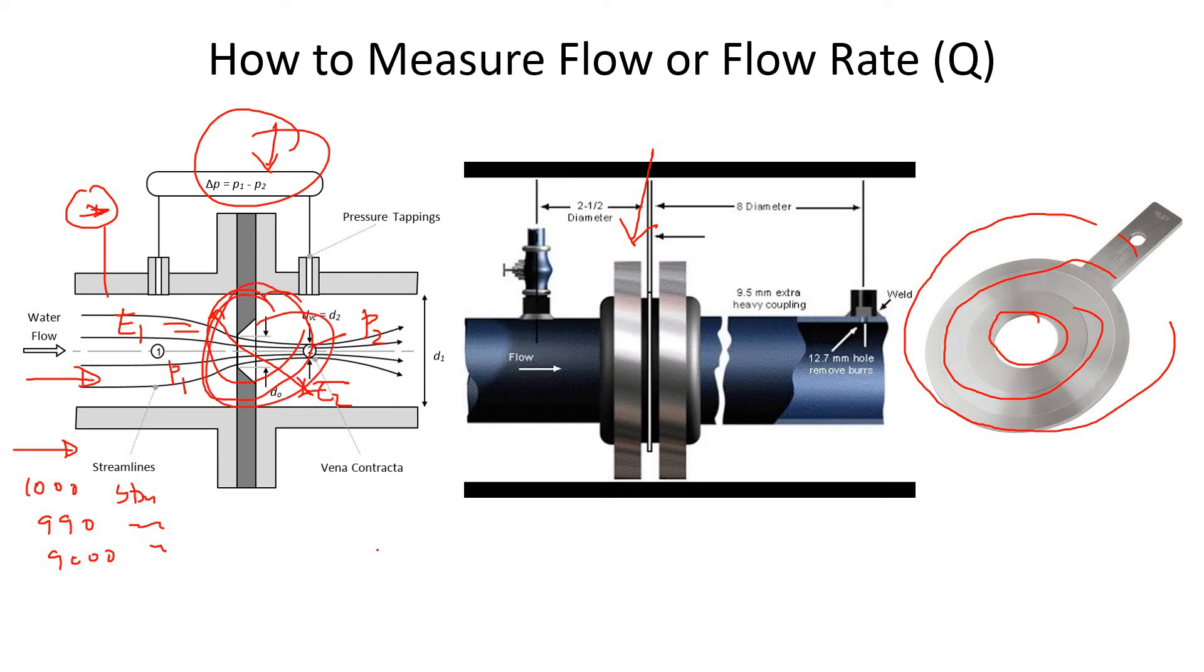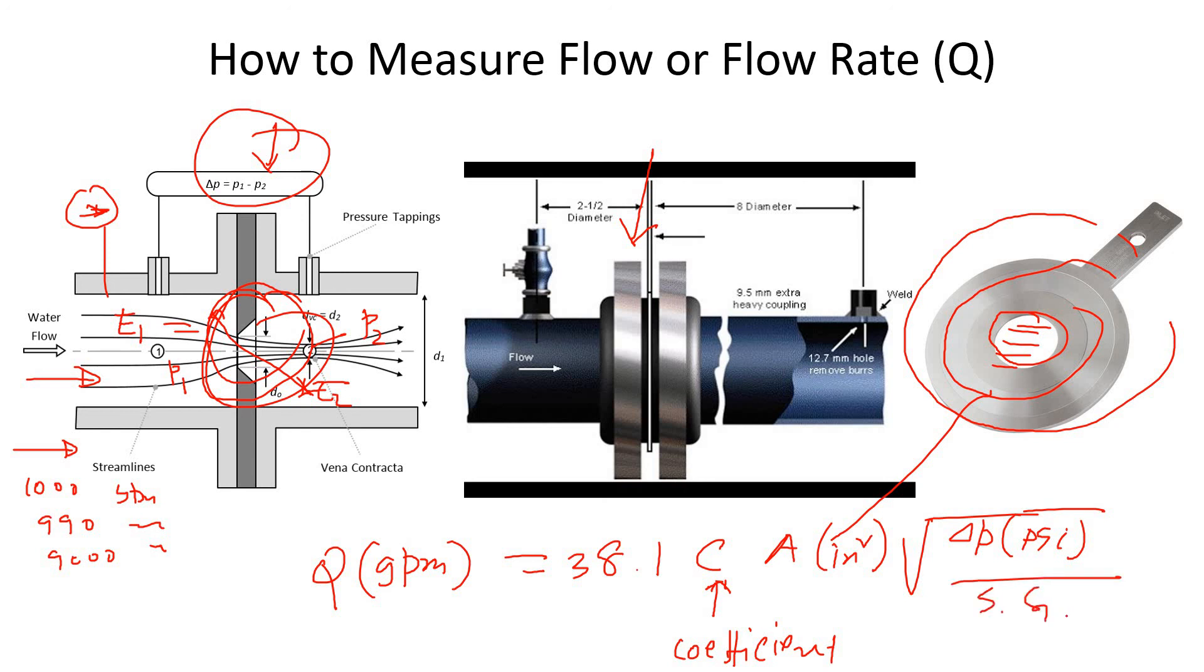If you look at the equation in US units, gallons per minute equals 38.1 times C (the orifice coefficient, which is calibrated using standard flow rates), times the area of the hole in square inches, times the square root of pressure difference in psi, divided by specific gravity. You can use this equation to calculate the flow. All you need is to measure the pressure difference, because the area is standard and the orifice coefficient and diameter are given on the orifice.